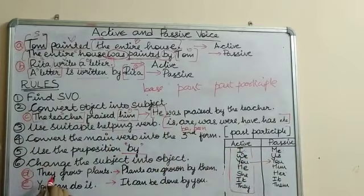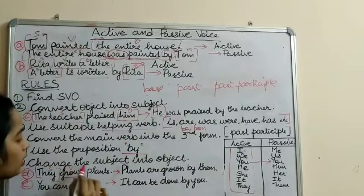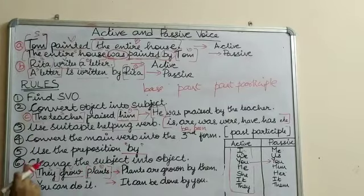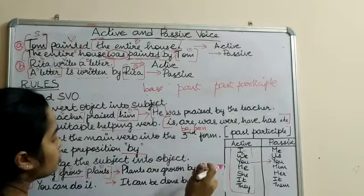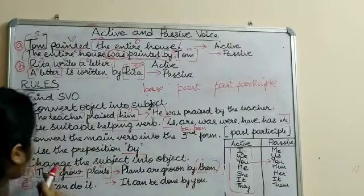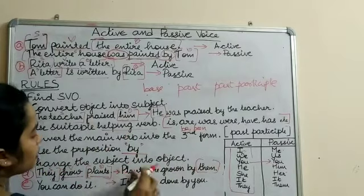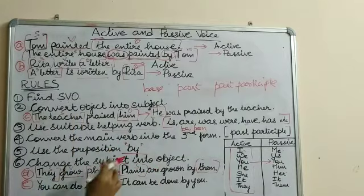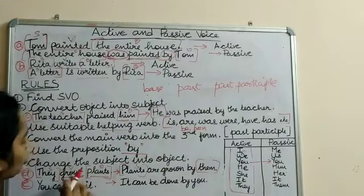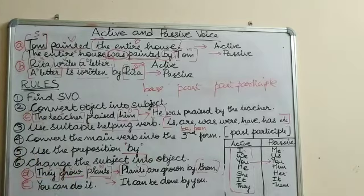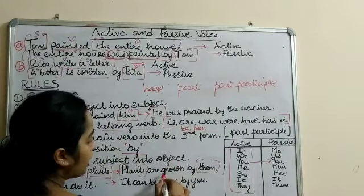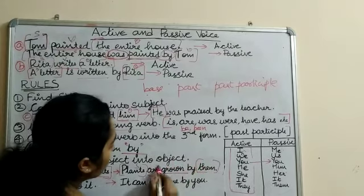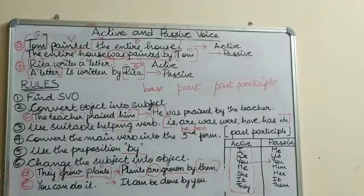For example: 'They grow plants.' Here 'they' is the subject, 'grow' is the verb, and 'plants' is the object. When converted to passive, 'they' becomes 'them' as the object, and 'plants' becomes the subject. The verb 'grow' is in base form, so we use the past participle 'grown,' and add the helping verb 'are.'